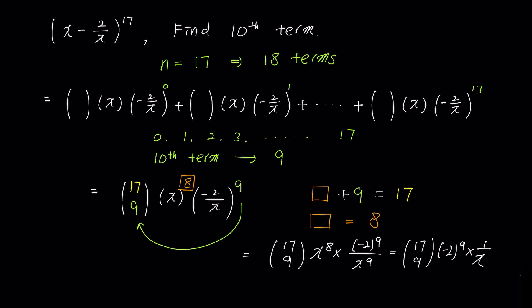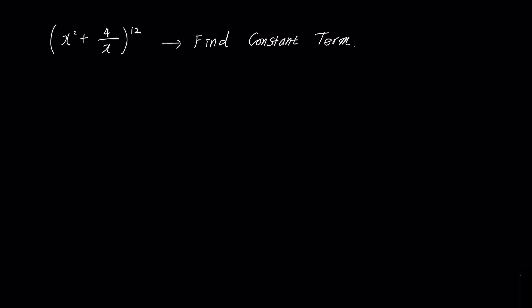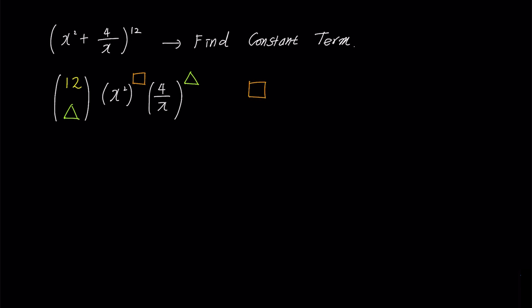Finally, it's time to try a new type of problem. In this problem, we'll try to find the constant term without x in (x^2 + 4/x) to the power of 12. If we expand it completely, we'll get 13 terms, but we only need 1. We'll take the form of combination times x^2 times (4/x), where the first value of the combination is 12. Let's call the exponent of the first term x^2 a 'square', and the exponent of the second term 4/x a 'triangle'. The second value of the combination will also be triangle. The sum of square and triangle will be 12. What values should we put into square and triangle to make x disappear and get only the constant?